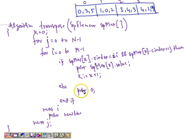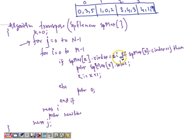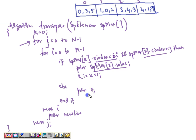We can also write a transpose algorithm to display the transpose of the sparse matrix when represented in a one-dimensional array. It is a simple algorithm where we traverse the column first and then the row — looping from j=0 to n-1 and then i=0 to m-1. We compare row and column indexes with i and j, display the element value if it matches, and display 0 if the element is not present. After completing each column, we move to a new line.